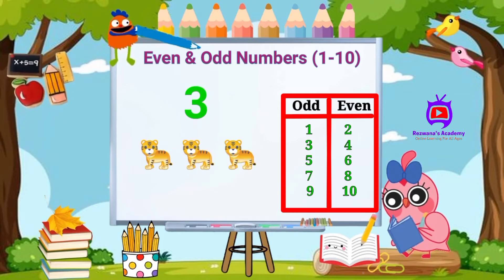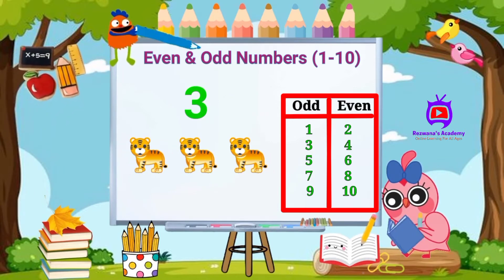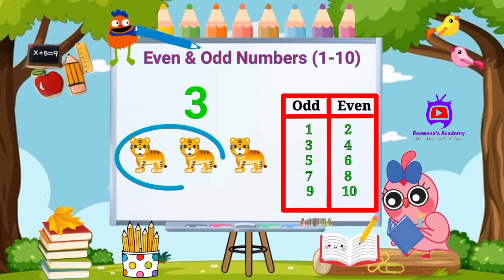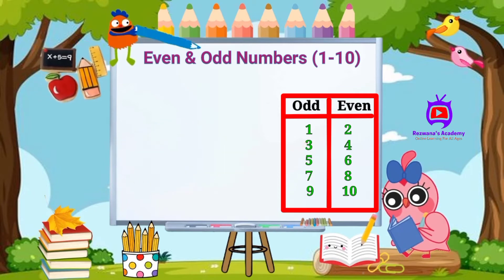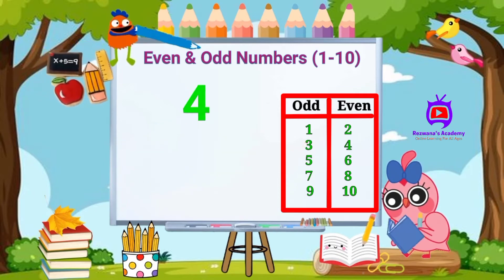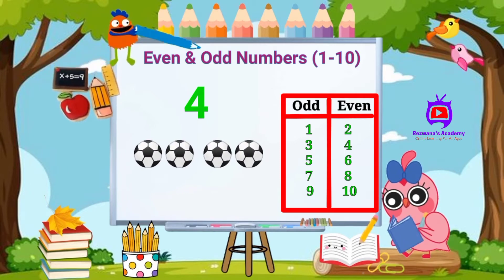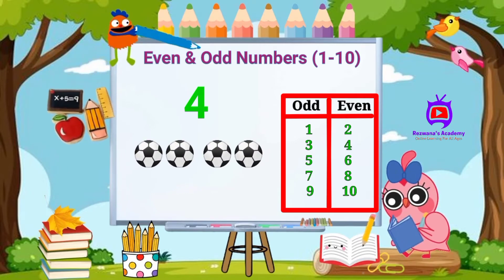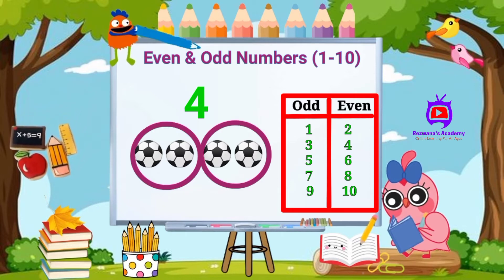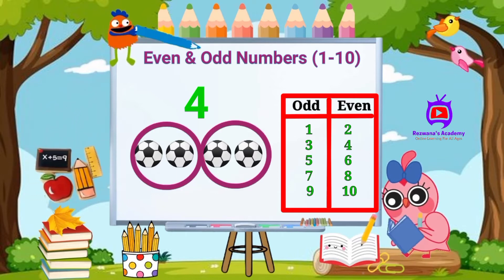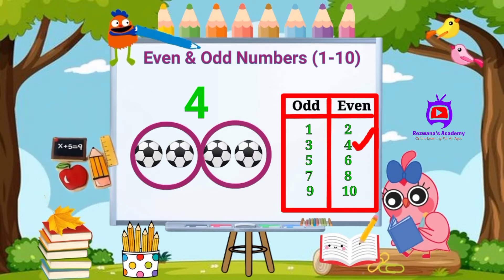Let's look at the next number, three. Here we have three tigers. If we split them into groups of two, one tiger is left alone, so three is an odd number. Number four — we have four balls. We create groups of two with nothing left, so four is an even number.